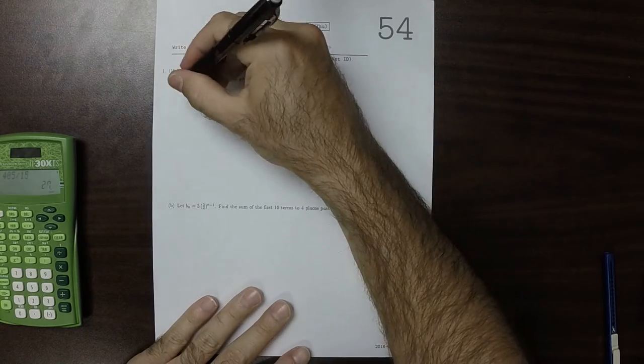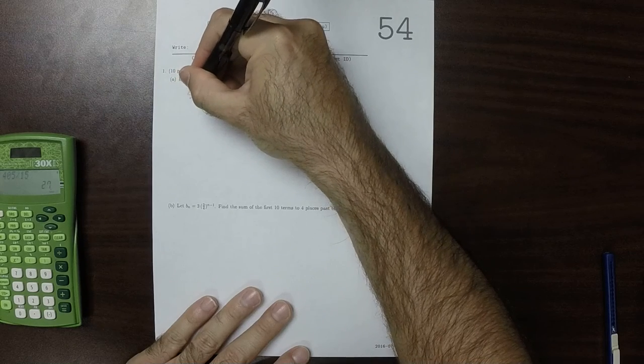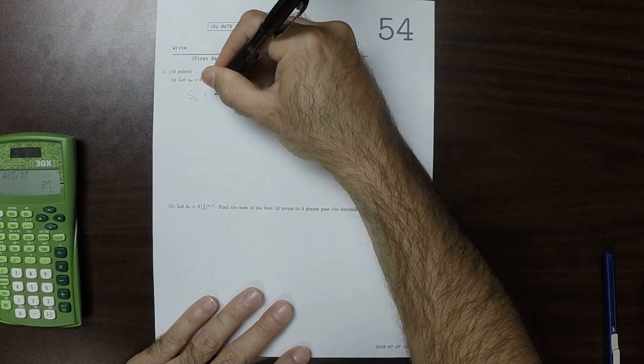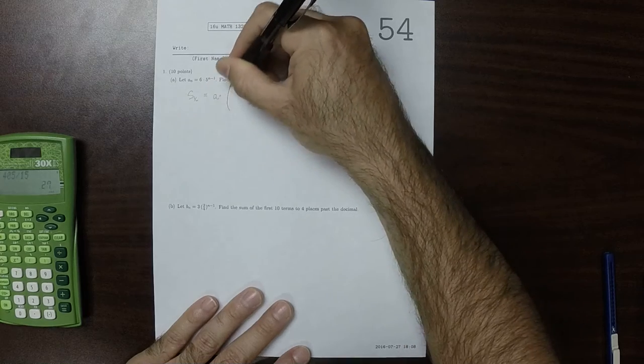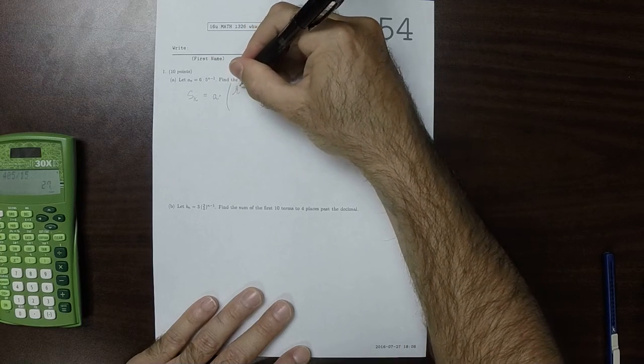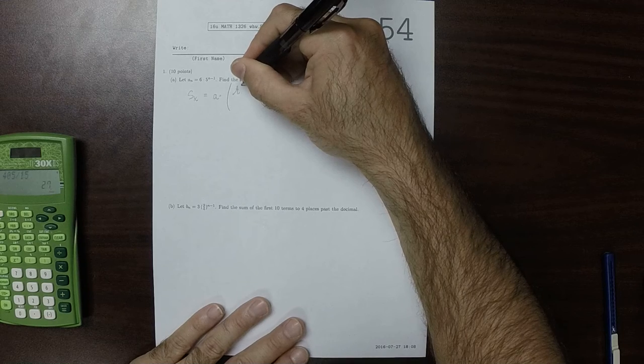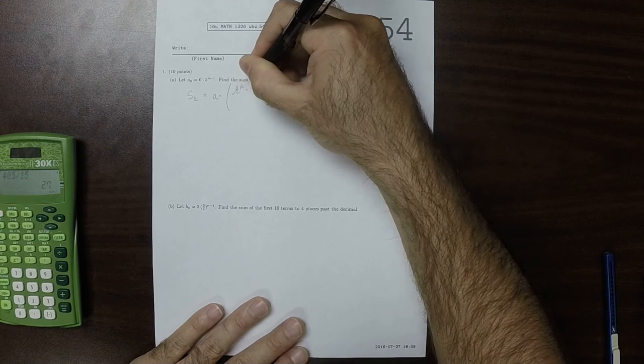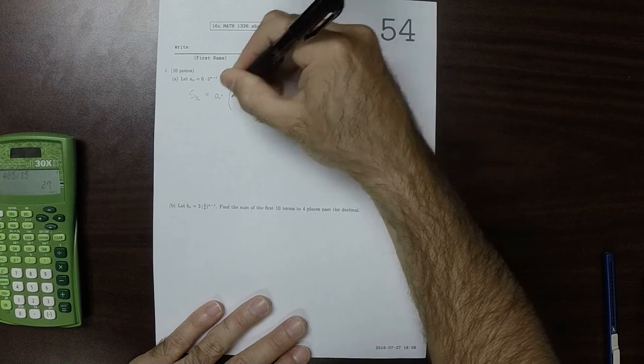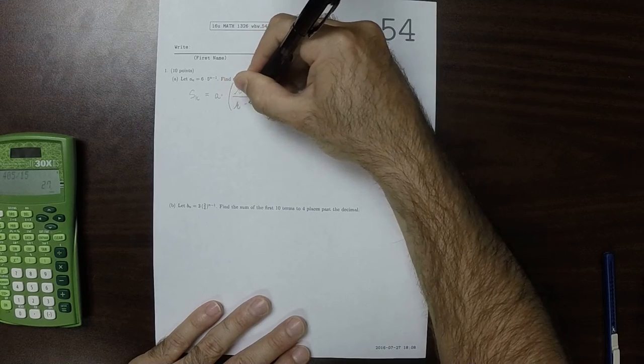As a reminder, the formula for this is SK equals A multiplied by R to the K minus 1, over R minus 1.